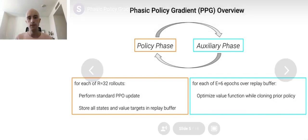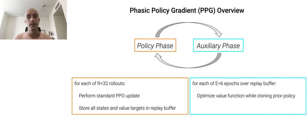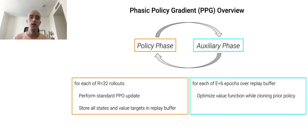I'll now explain how we do this, starting with a high-level overview of the algorithm before diving into more detailed pseudocode. In PPG, training proceeds in two alternating phases: the policy phase followed by the auxiliary phase. The policy phase is simply a standard RL training loop. We perform rollouts in the environment to collect data, then update the policy using any on-policy algorithm — in our case, proximal policy optimization (PPO), though we expect other algorithms would also work well. Throughout the policy phase, we store states and value function targets in a replay buffer for use during the auxiliary phase. During the auxiliary phase, we distill features from the value network into the policy network. Although this distillation does nothing to improve the current policy, it should improve training in future policy phases. Compared to PPO, the novel contribution of PPG is the inclusion of these periodic auxiliary phases.